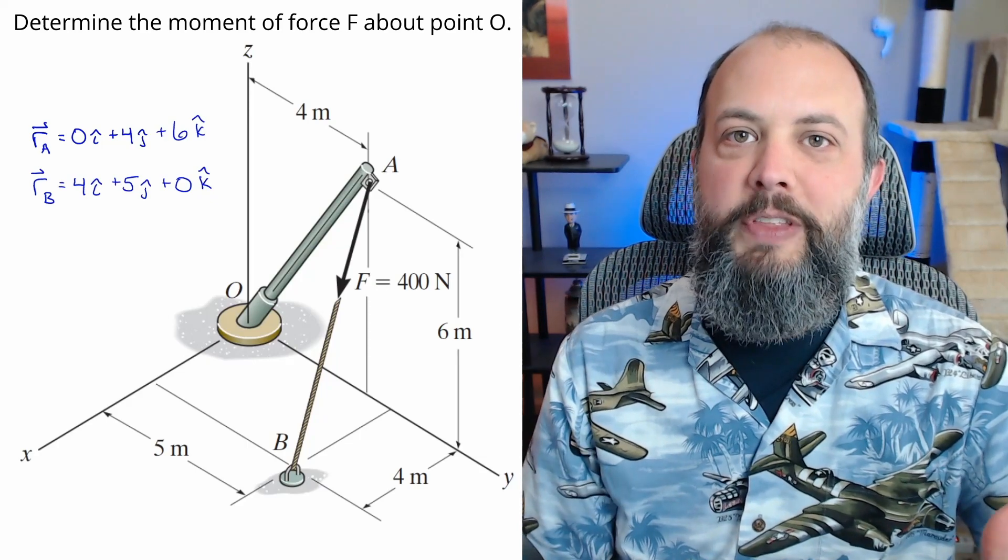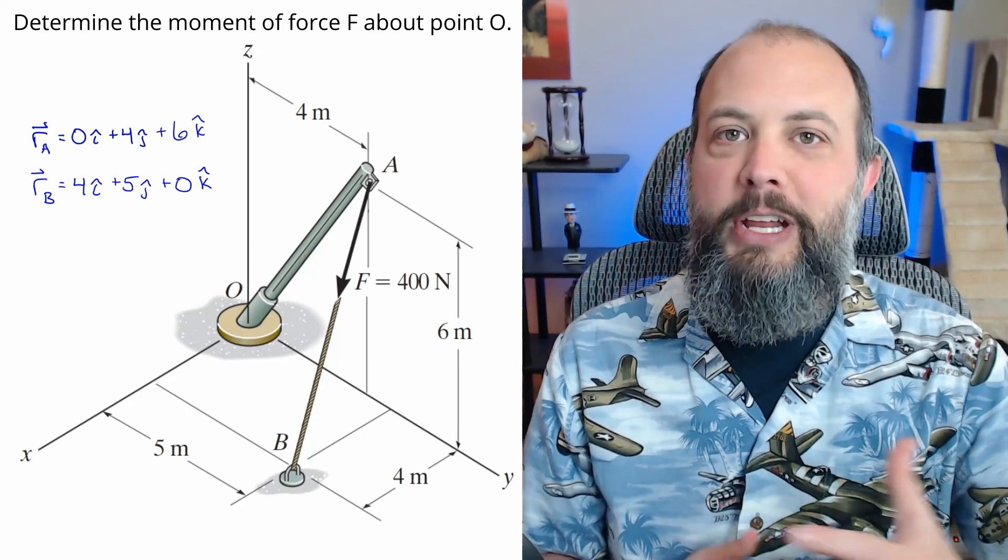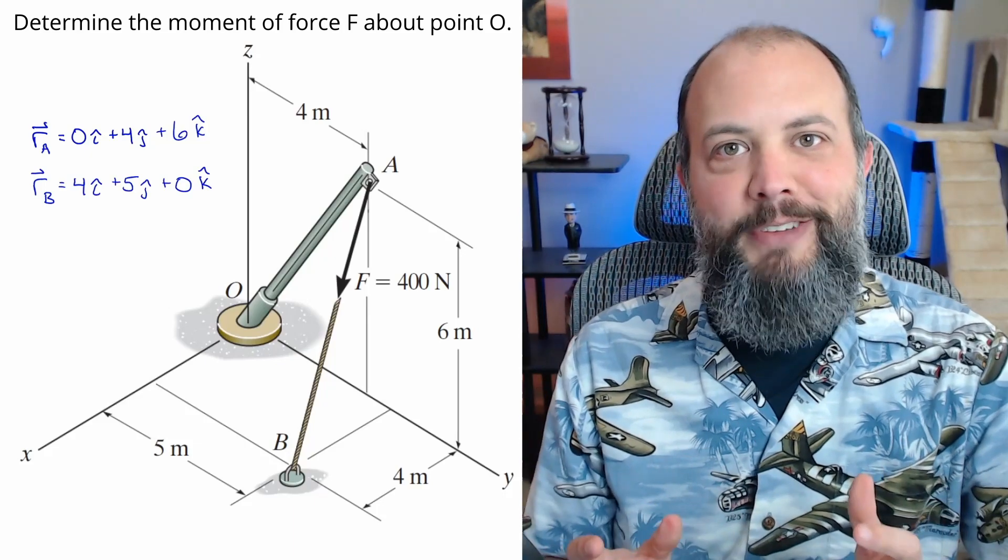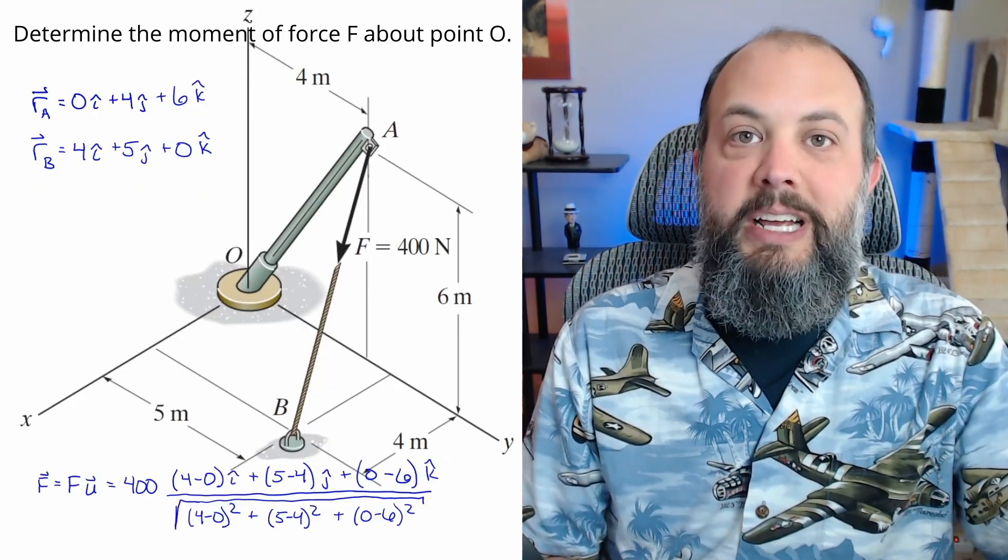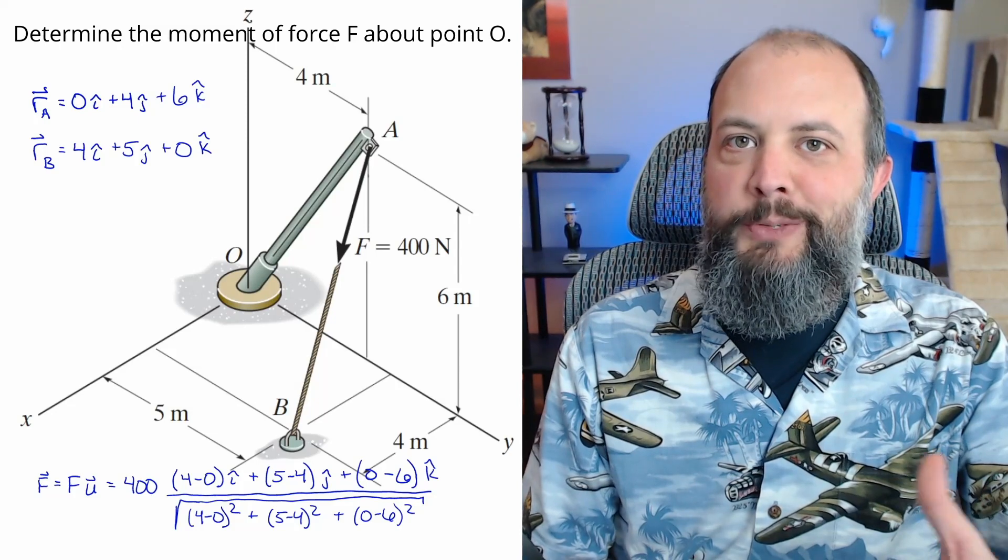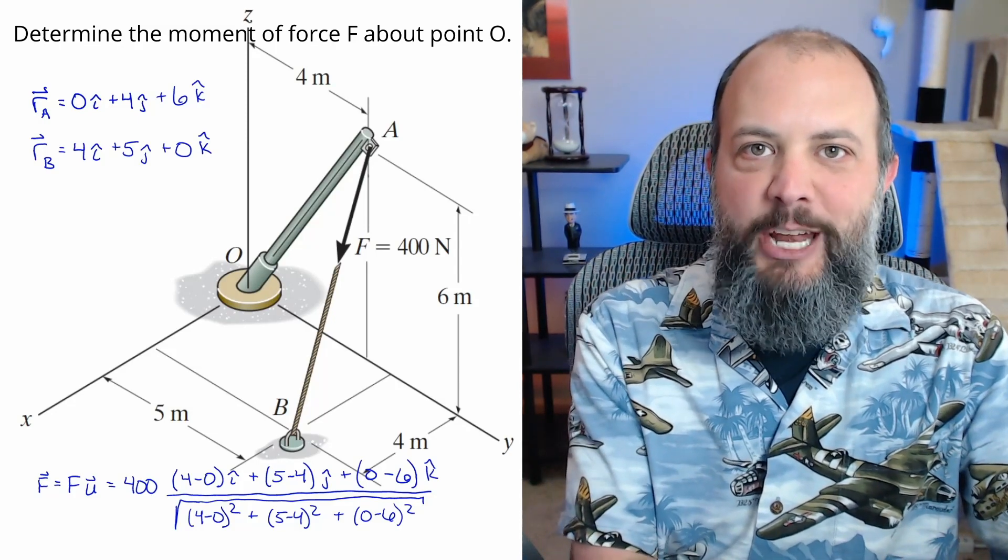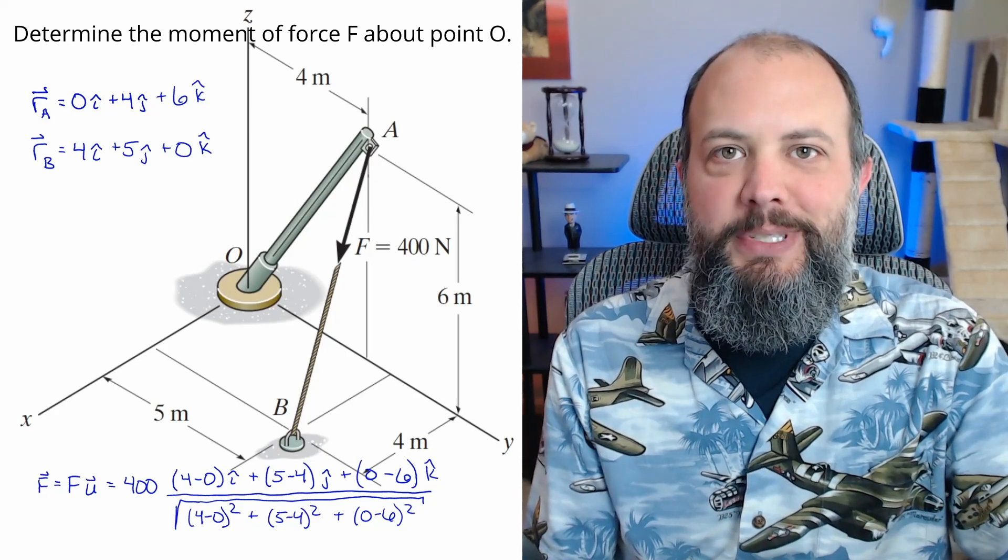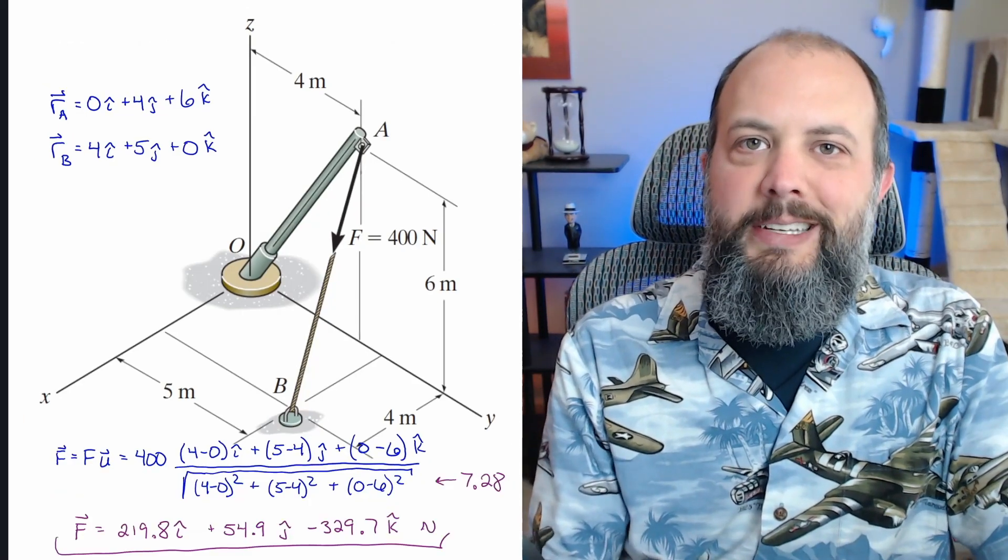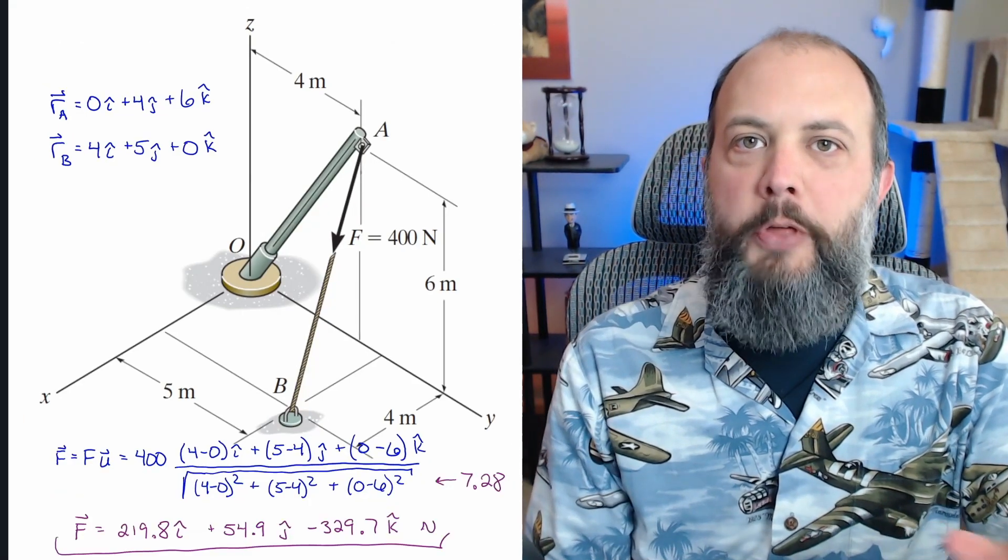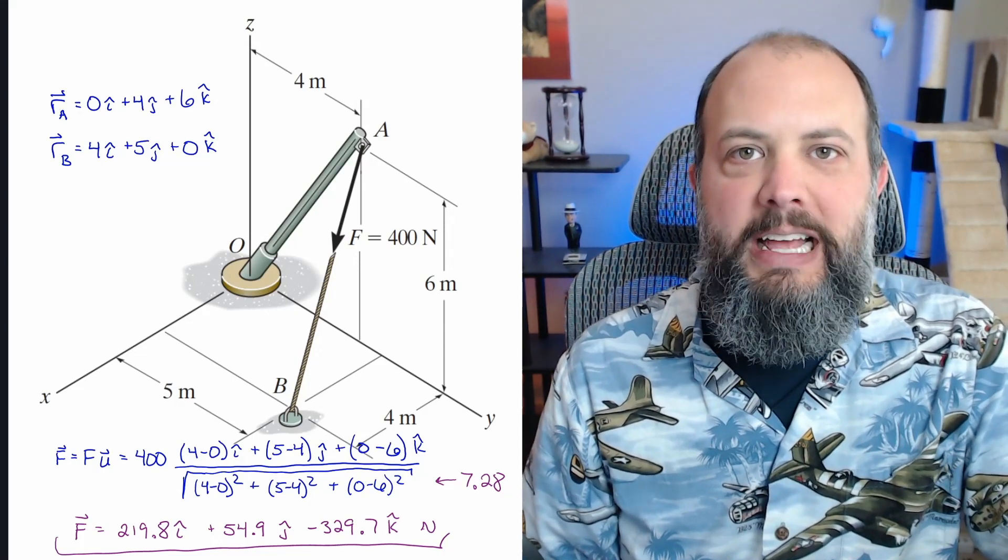But before doing the cross product, we are going to have to use the position vector from A to B in order to convert F into Cartesian form. If you need a refresher on position vectors and unit vectors, I've got a video on that too. We'll set up the F equals FU equation by subtracting the position of B minus the position of A, that is the end position of the vector minus the initial position. So next I'll use the cool method to set up the cross product. I'll do both r_a cross F and r_b cross F.